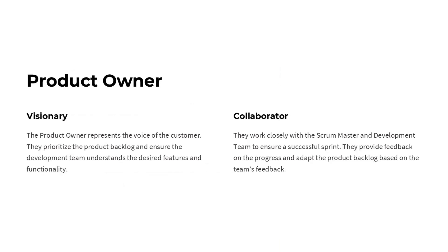As the product owner, I'm responsible for representing the voice of the customer and prioritizing the product backlog. My role is to ensure the development team clearly understands the features and functionality we need to deliver. I work closely with the Scrum master and the development team to keep the project on track and adapt the product backlog based on their feedback. My goal is to be a visionary who sets the direction while also being a collaborative partner to the team.